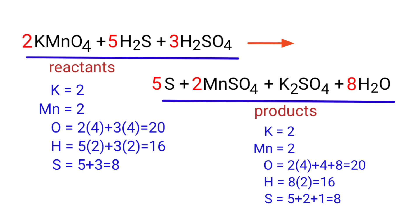The equation is now balanced. There are two potassium atoms, two manganese atoms, twenty oxygen atoms, sixteen hydrogen atoms, and eight sulfur atoms on both sides.